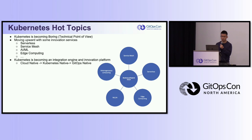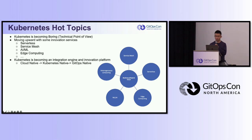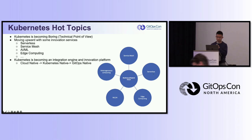First, I want to share some Kubernetes hot topics. Based on info from KubeCon, we can see that Kubernetes has become boring — which just means that Kubernetes has become mature. People are trying to move upward, building applications on top of Kubernetes for service mesh, edge, AI, and machine learning. Kubernetes is becoming an integration engine and innovation platform.